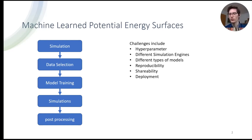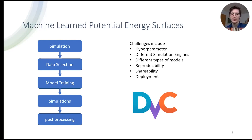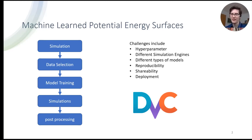The challenge of reproducibility really quickly comes to the fore — how did you get to this data? And with that, also shareability of data. If you have terabytes of data, you might want to share a script that allows you to reproduce that data on your own machine, because it might be more cost-efficient to rerun the simulation than sharing large amounts of data. And also deployment of the machine learning model in the end — this is where DVC came in handy for us, because a lot of those steps can be done in a DVC pipeline, making them reproducible and easy to share with others.